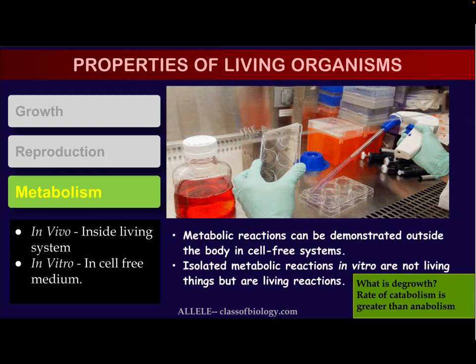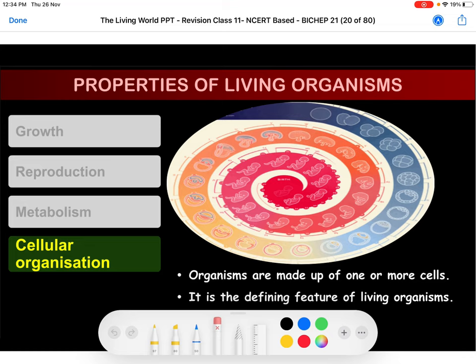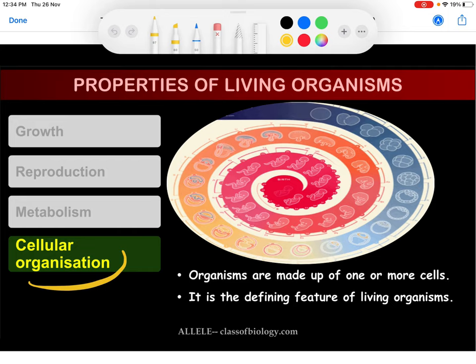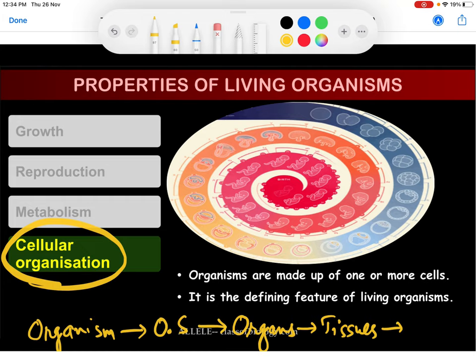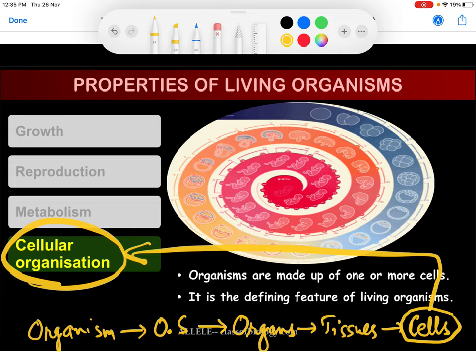The next characteristic feature of living organisms is cellular organization. An organism is made up of organ systems; each organ system consists of organs; each organ is composed of tissues; and all tissues are made up of cells. This arrangement — cell makes tissue, tissue makes organ, organ makes organ system, organ system makes organism — is termed cellular organization.